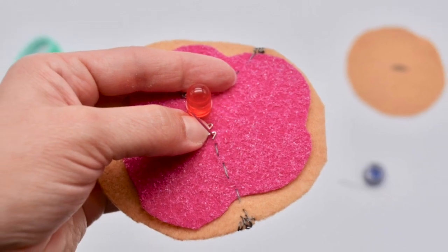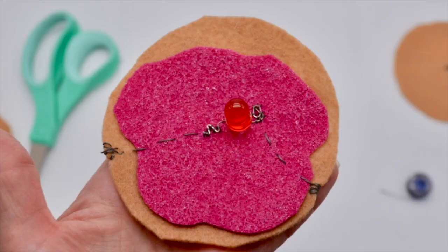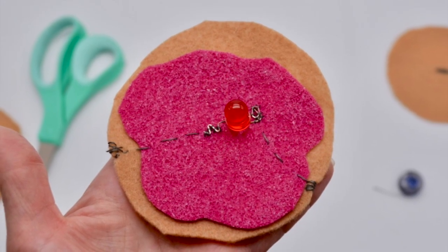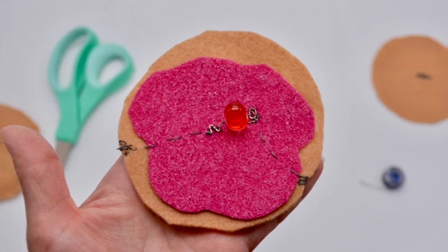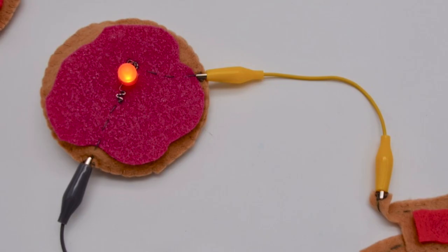Once you've sewn your positive side, make sure you tie a knot on the back and break the thread and start sewing the same thing on the other side. Make sure this is not one continuous thread from the positive to the negative, otherwise your LED won't light up.